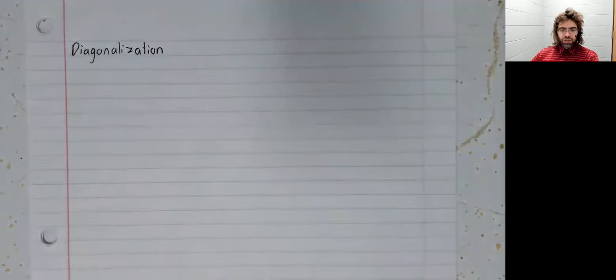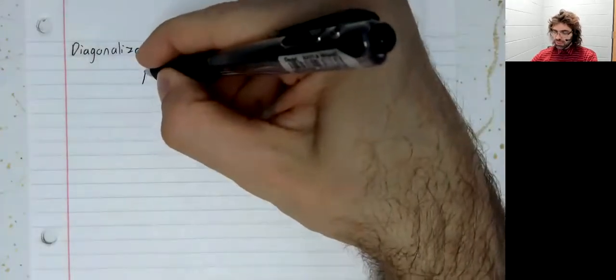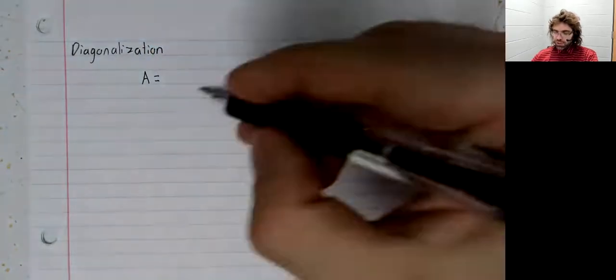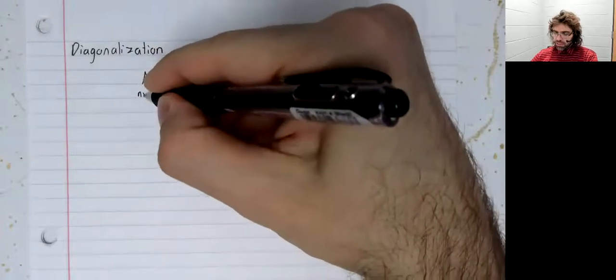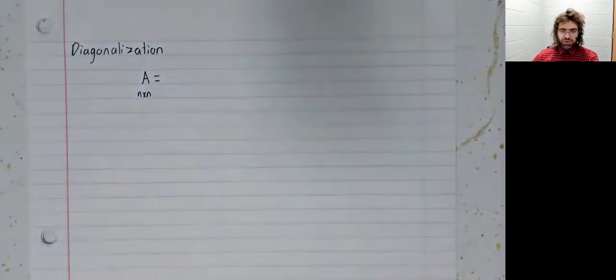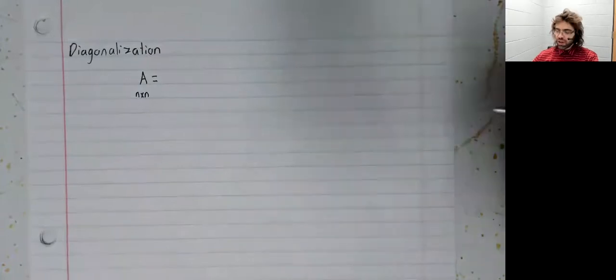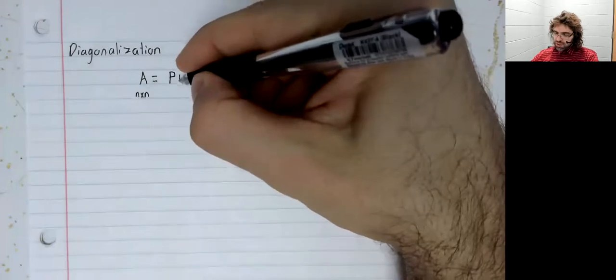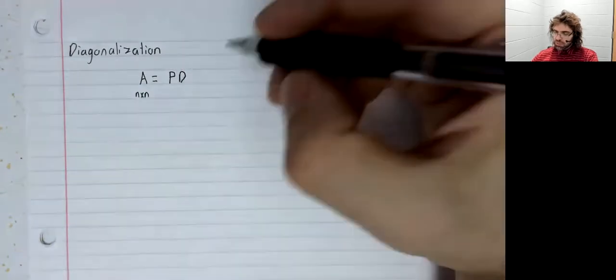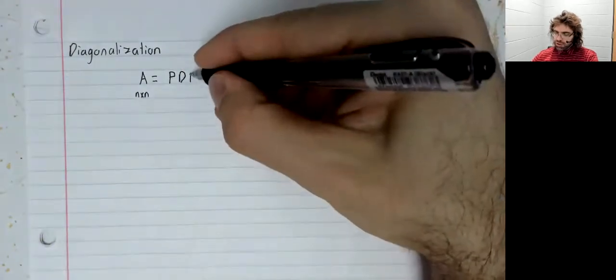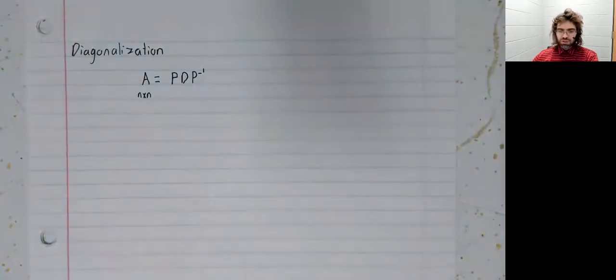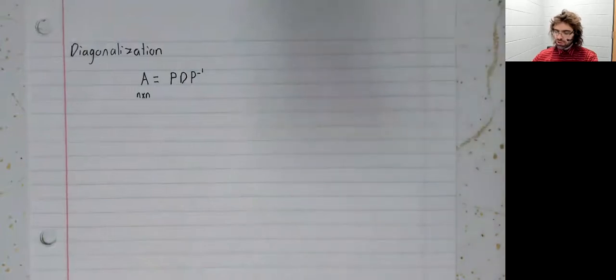The factorization we're looking at specifically, the diagonalization, is when you take a matrix, a square matrix we should specify, and you write it as a matrix times another matrix times the inverse of the first matrix.